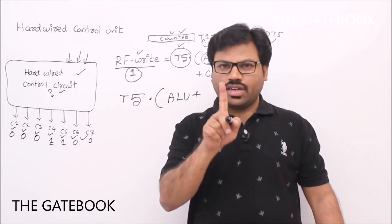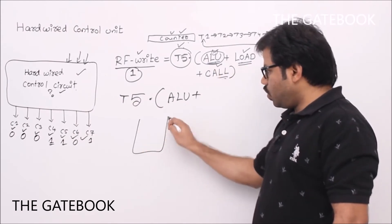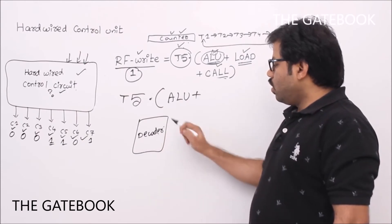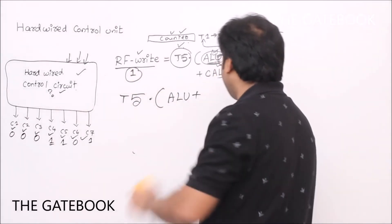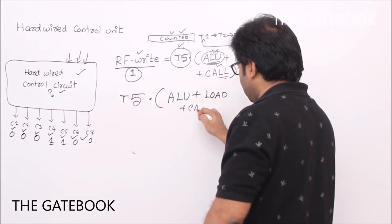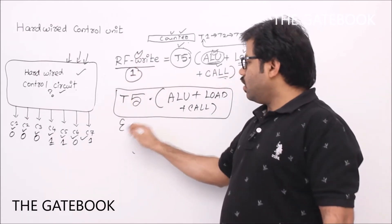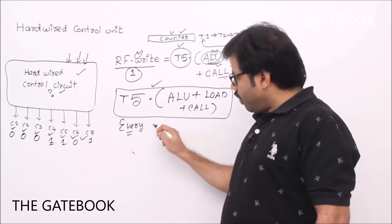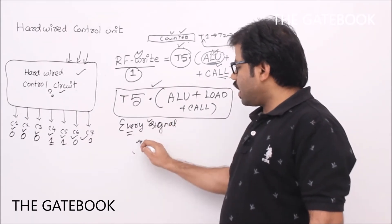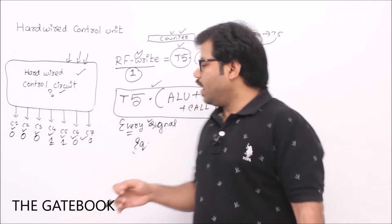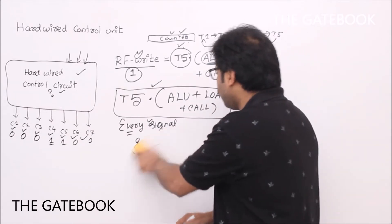How do you know whether it is an ALU instruction or not? We are doing decoding. In the decoding phase, we decode the instruction and understand whether it is an ALU instruction, load instruction, or call instruction. There is a circuit called a decoder whose job is to identify whether it is an ALU, load, or call instruction. So the Boolean expression representing the RF write signal is: RF write = (ALU + load + call) · t5. Similarly, for every control signal we have to write this kind of equation and then realize a circuit.